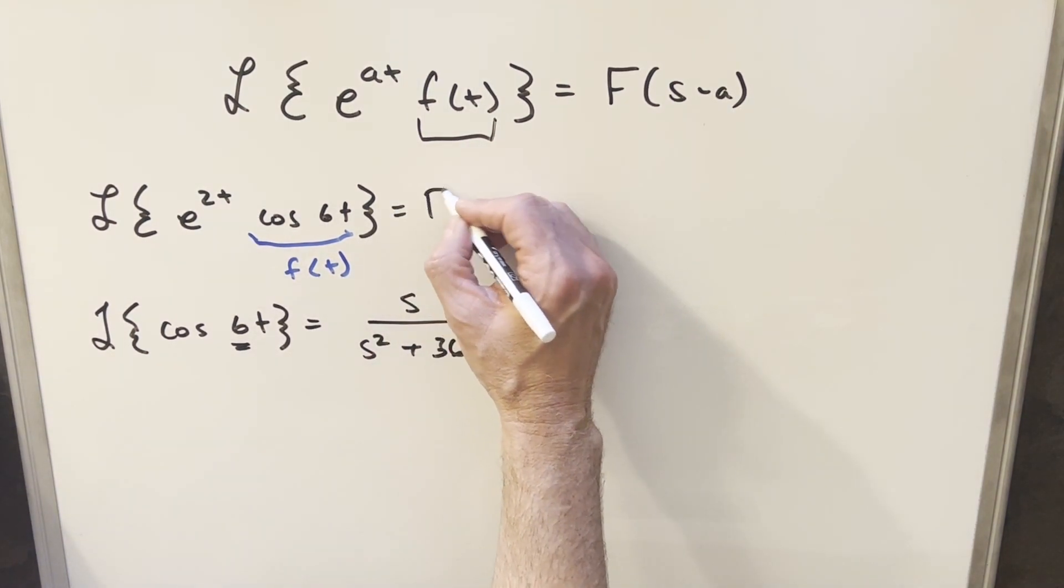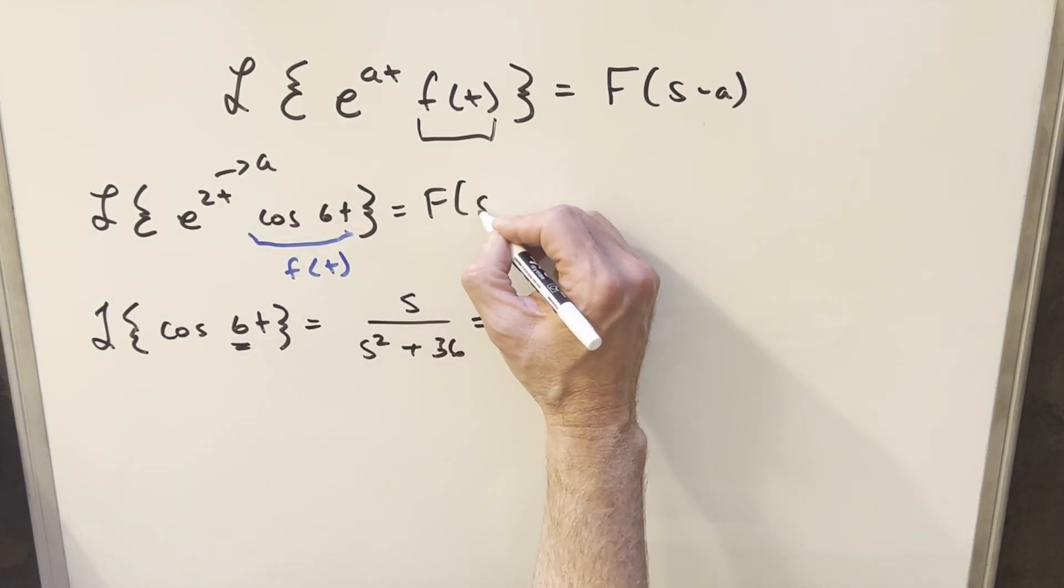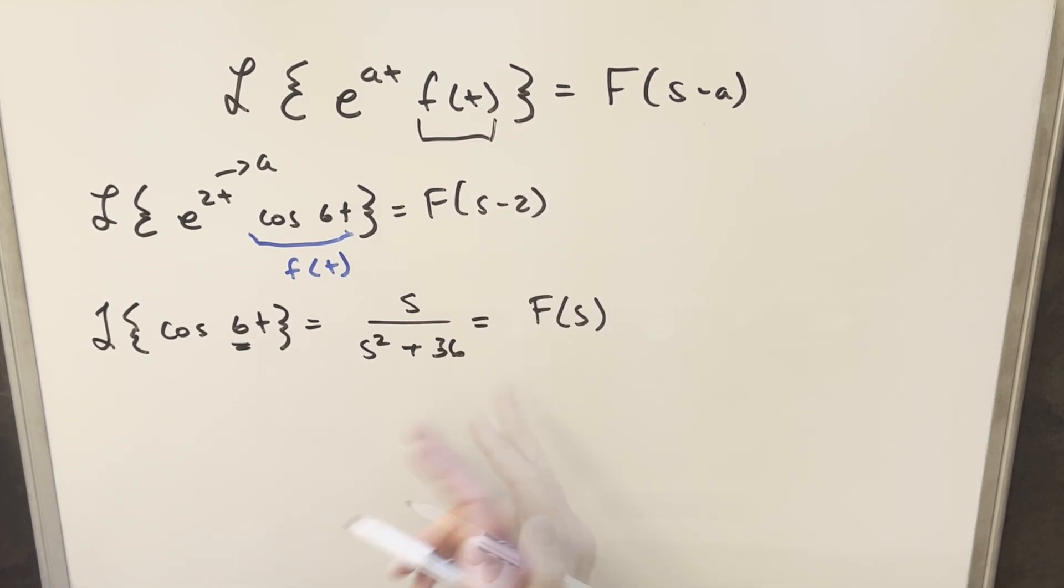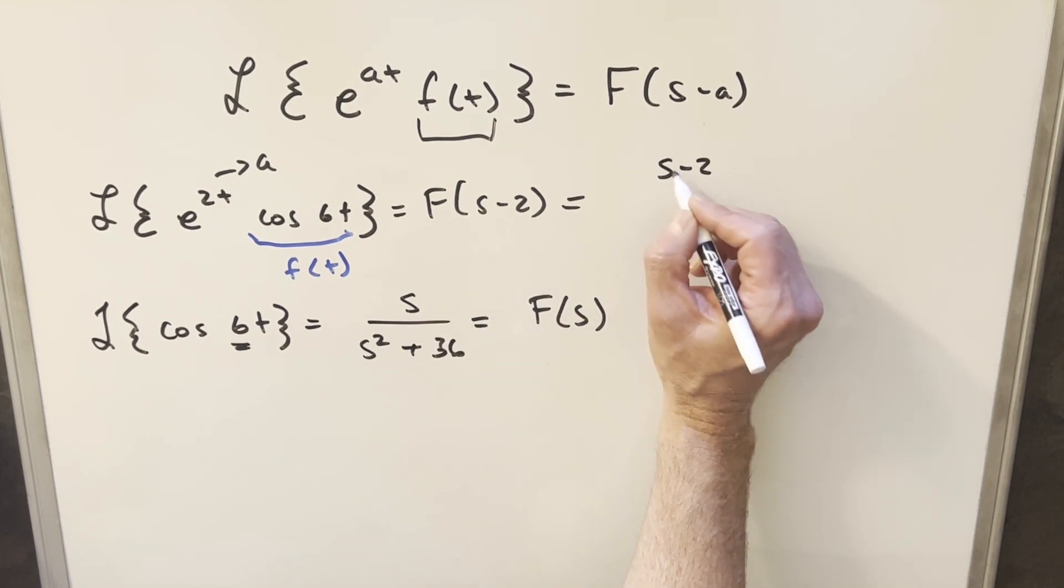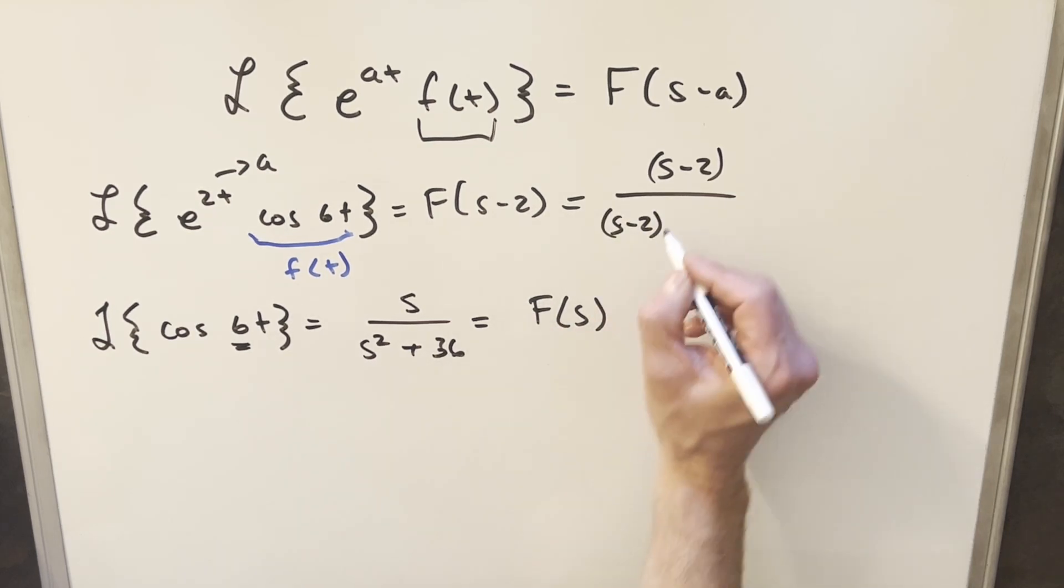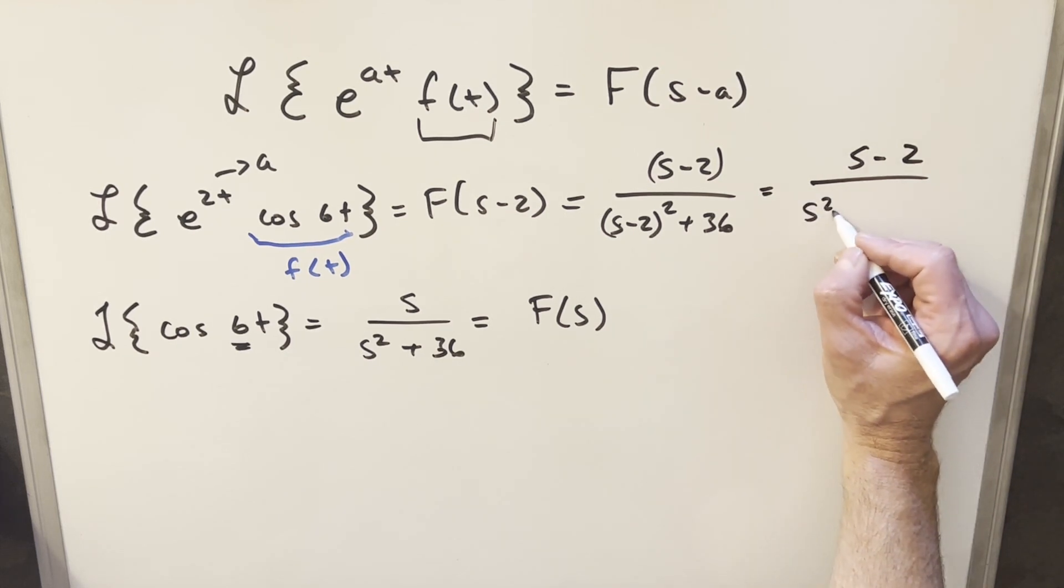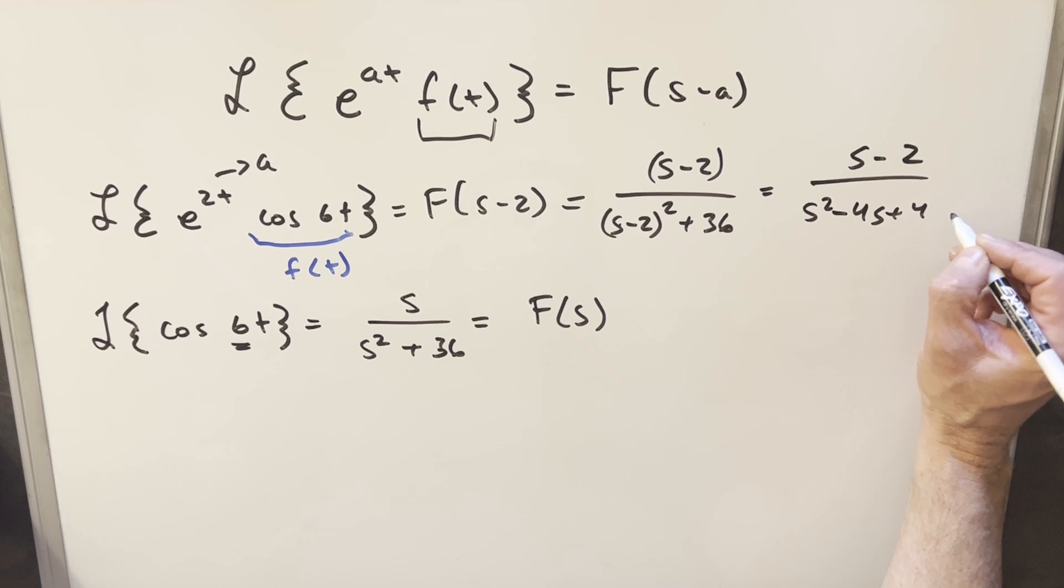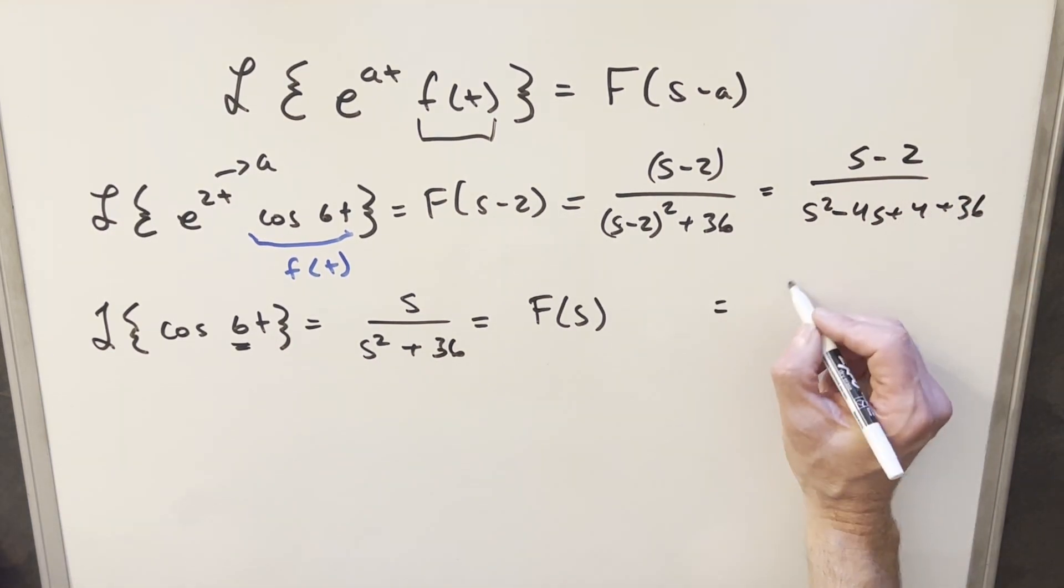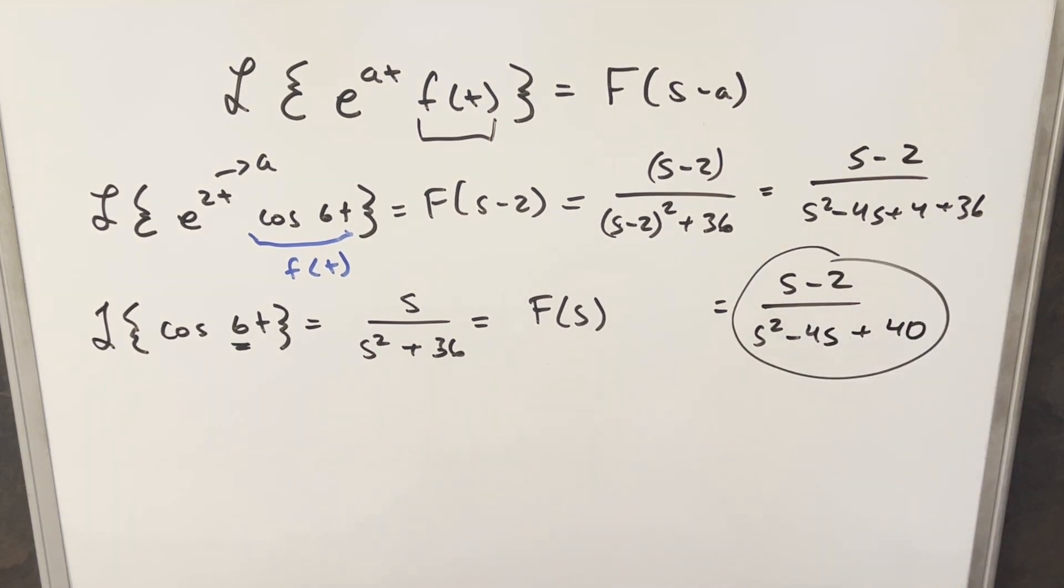But what we want for this thing is we want f of s minus a, where our a value, our a is going to be just 2. So what we want to look at is what is f of s minus 2. And we already have our function, we just need to change the input. So plugging s minus 2 in here, this is going to give me s minus 2. Then we're going to have, in the denominator s minus 2 squared plus 36. And I'll just multiply this out. So we have same numerator, this is going to become s squared minus 4s plus 4 plus 36. And so for a solution to this thing, we're going to have s minus 2, s squared minus 4s plus 40. And that's really all there is to it. So let's try another one.